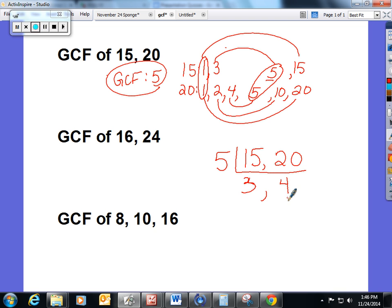Look to see if I can divide 3 and 4 by any other common factor. I can't, so I know I'm done and the GCF is 5. Just a little quicker and easier method. I'm going to show you the rest of the problems today with the ladder method.